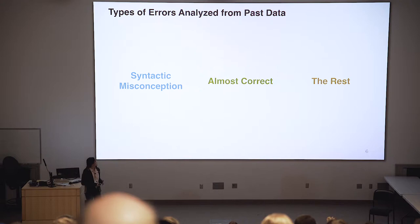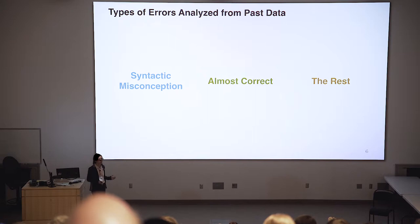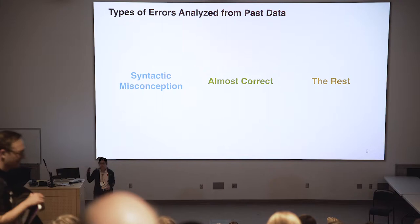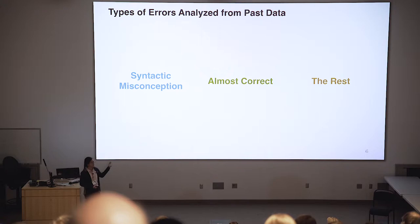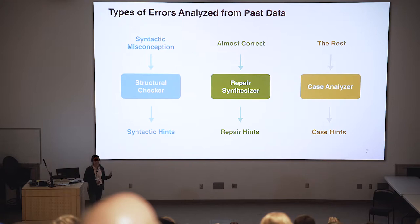Before we built our system, we analyzed the past data — essentially all the students from the previous offering — and categorized the incorrect programs submitted by students into two different categories. The first category is programs that contain syntax misconceptions; in Racket in particular, that means misused parentheses — not trivial mistakes where you miss an open or closing paren, but misplace them. The second category is programs that are almost correct but still contain some minor mistake like an off-by-one error or missing a base case. The rest of the mistakes go into a third category. We developed three different techniques to handle these three common mistakes.